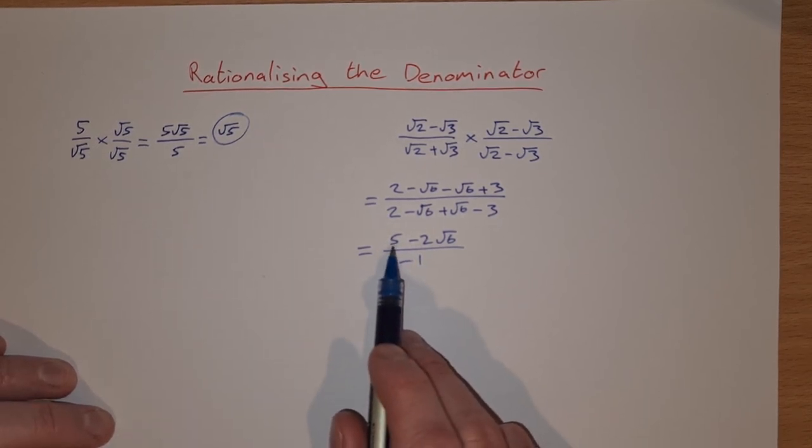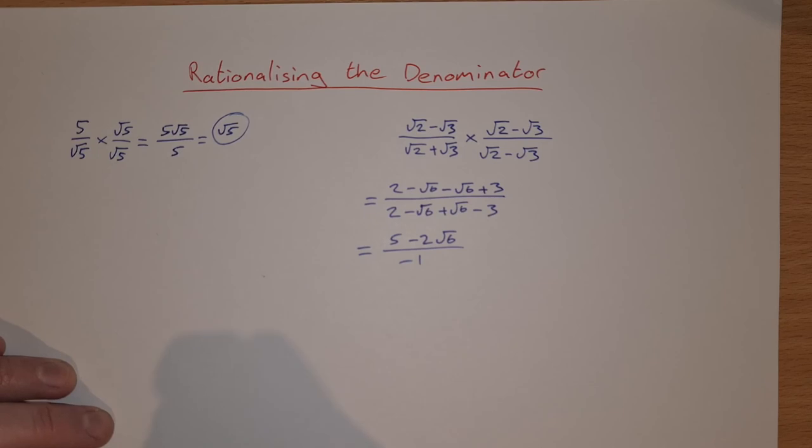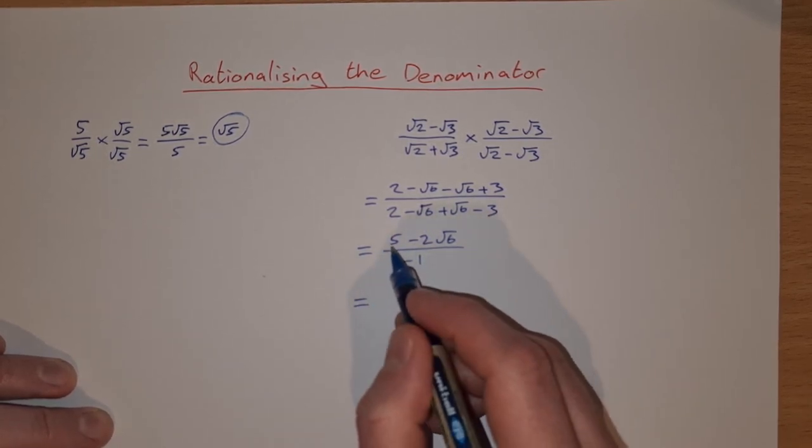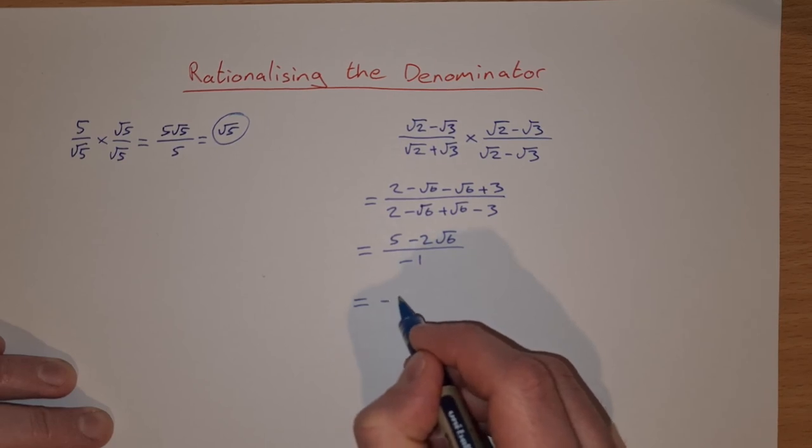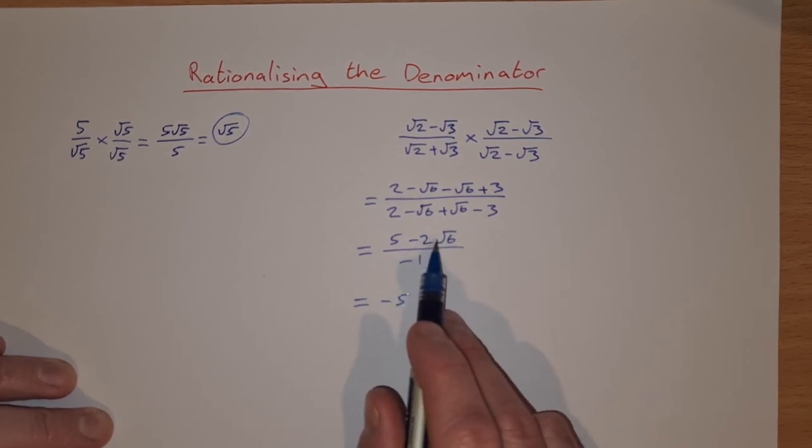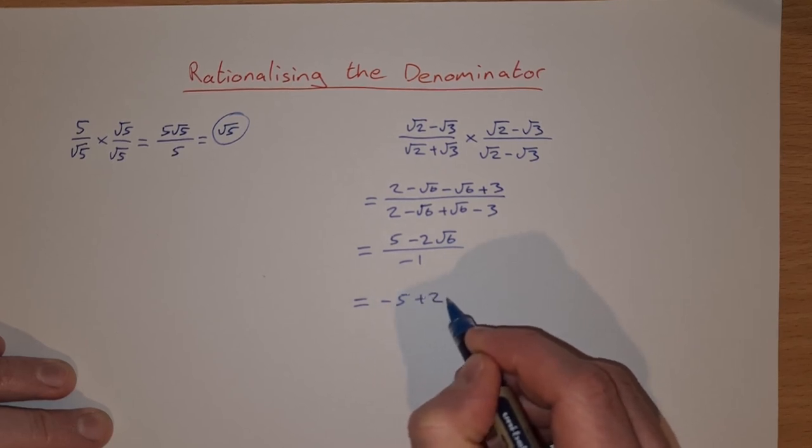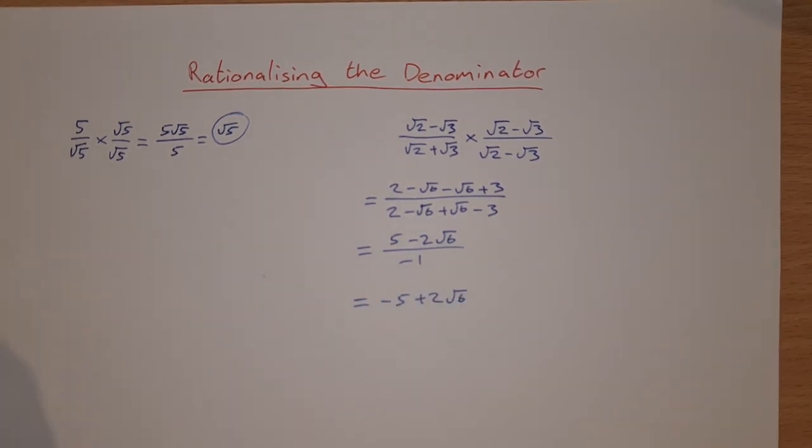So then it's 5 minus 2 root 6 divided by minus 1. We can simplify that further by actually doing out the division. 5 divided by minus 1 is minus 5, and minus 2 root 6 divided by minus 1 is plus 2 root 6. So our answer is minus 5 plus 2 root 6.